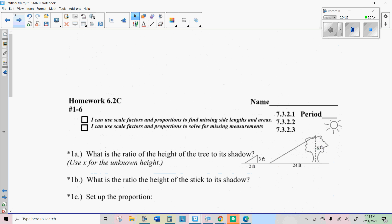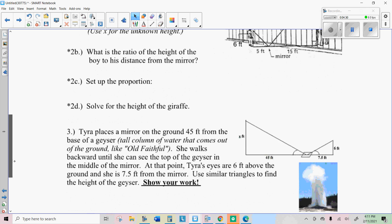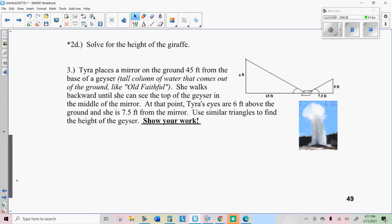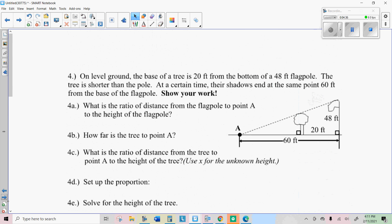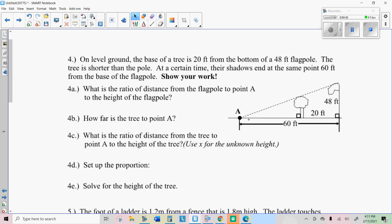And so on your homework, you'll be doing the same thing. I think I'll do one more for you. This one is just a little bit different. So I'll go through number four with you. So notice how our similar triangles are sort of built into each other on here. So we're going to find the ratio of the distance from the flagpole to point A, and that's sixty, to the height of the flagpole, which is forty eight.